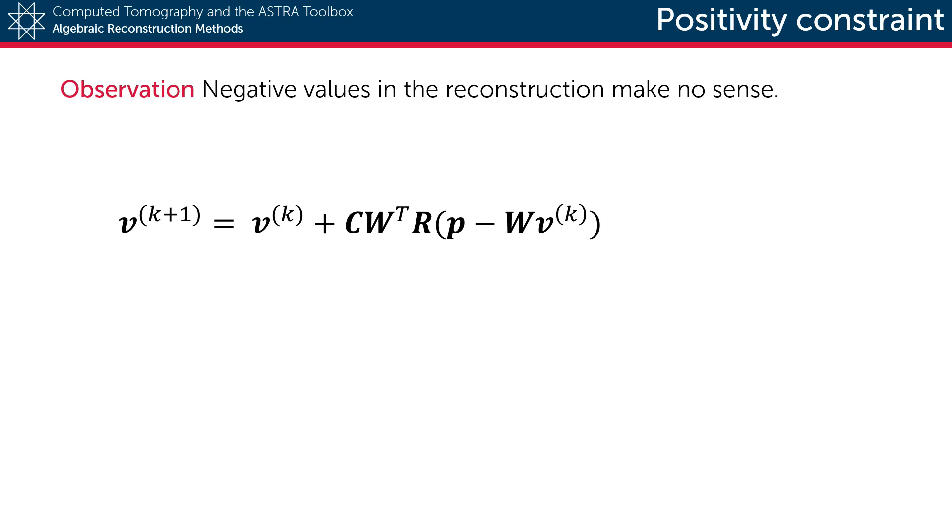In conventional x-ray tomography, the value of a certain reconstructed pixel represents the attenuation factor of the material that is present in that exact location. This attenuation factor tells us how much the intensity of an x-ray beam will decrease when it passes through this point. Now given that beam intensities cannot increase, we can observe that negative values in a reconstructed image make no sense at all.